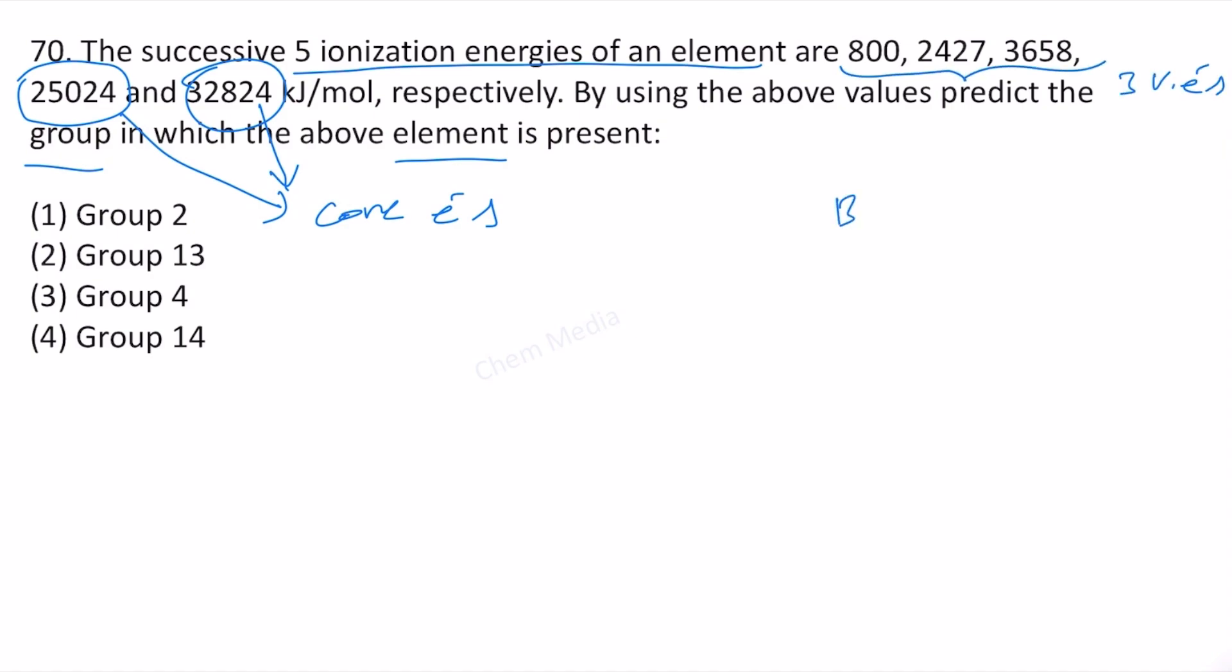Boron has three valence electrons: 1s² 2s² 2p¹. We have three valence electrons here, and therefore when we try to knock out the core electrons, the ionization energy is increasing tremendously.